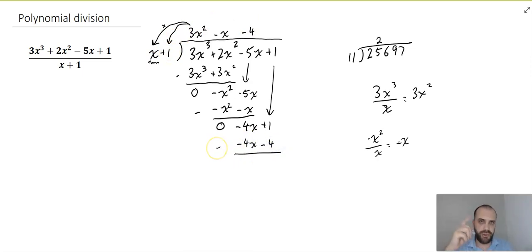All right, and we subtract one from the other. Now, again, negative 4x minus minus 4x. If you've done everything correctly, this should be 0. And then positive 1 minus minus 4 is the same as positive 1 plus 4, which is plus 5.